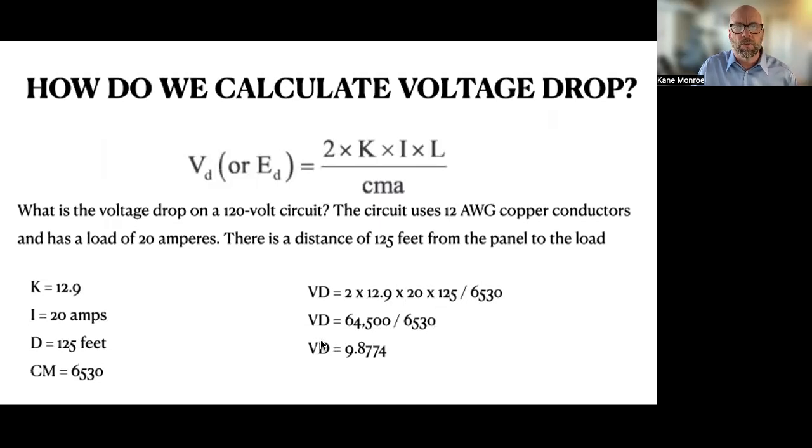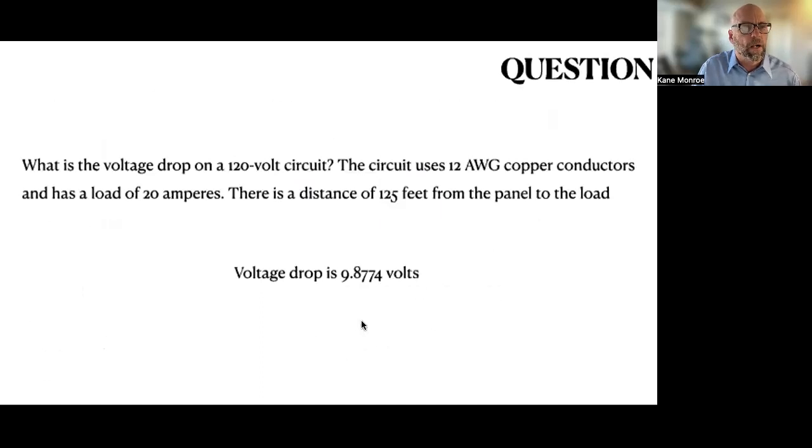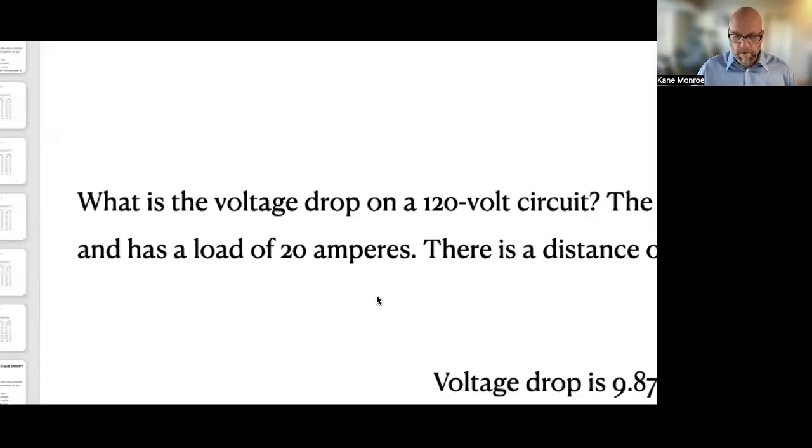And you get a voltage drop of 9.8774 volts. And so the answer, the question was, what's the voltage drop of 120 volt circuit? The circuit uses 12 AWG copper conductors and has a load of 20 amperes. And there's a distance of 125 feet from the panel to the load. The voltage drop is 9.874 volts.